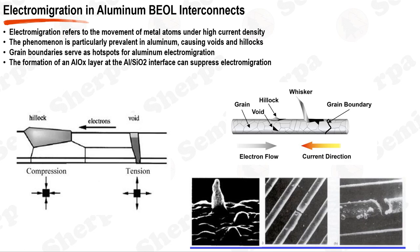Electromigration in aluminum creates areas of compressive and tensile stress, leading to the formation of voids and hillocks, which can ultimately cause IC failure. Grain boundaries, being areas of high energy and high diffusivity, serve as preferential paths for migration of aluminum atoms — they are referred to as the hotspots for electromigration. At grain boundaries, aluminum atoms migrate more easily, forming voids in these regions. Conversely, areas where atoms accumulate form hillocks — protrusions in the interconnect structure — both detrimentally impacting electrical performance.